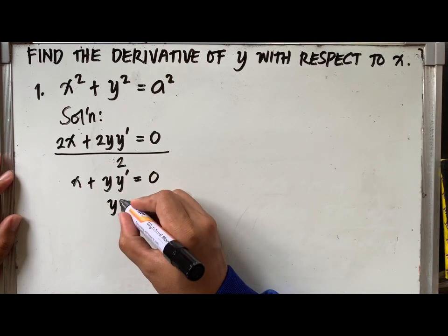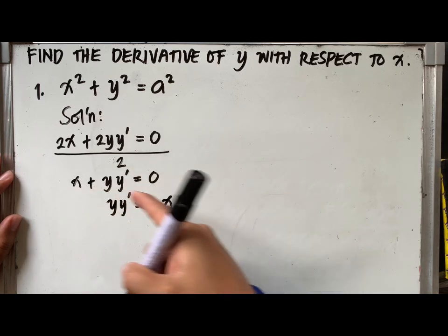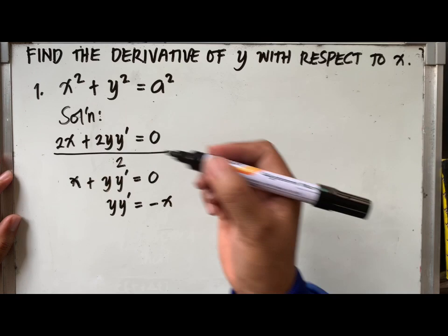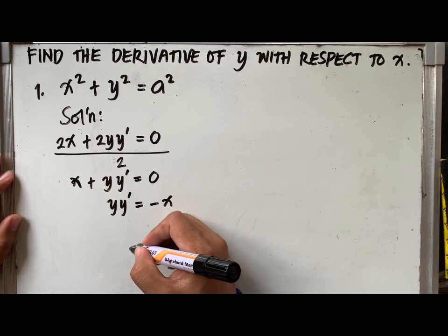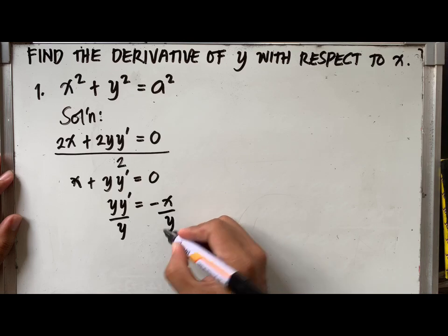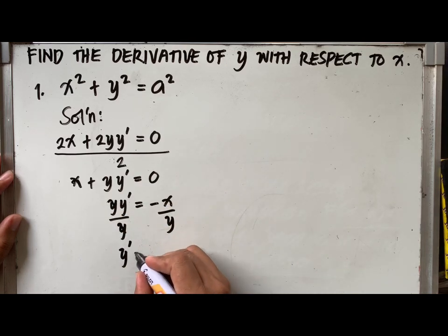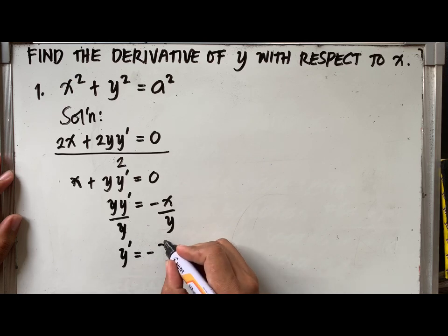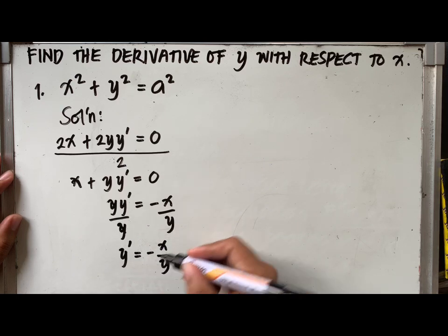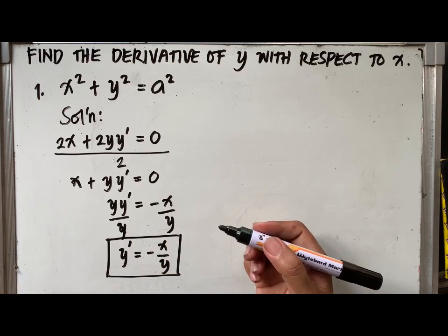Now, let's solve for y prime by transposing x to the right side of the equation. Thus, we have y, y prime equal to negative x. Then, divide both sides by y to eliminate y at the left side of the equation. Now, we have y prime equal to negative x over y. And this is our answer.